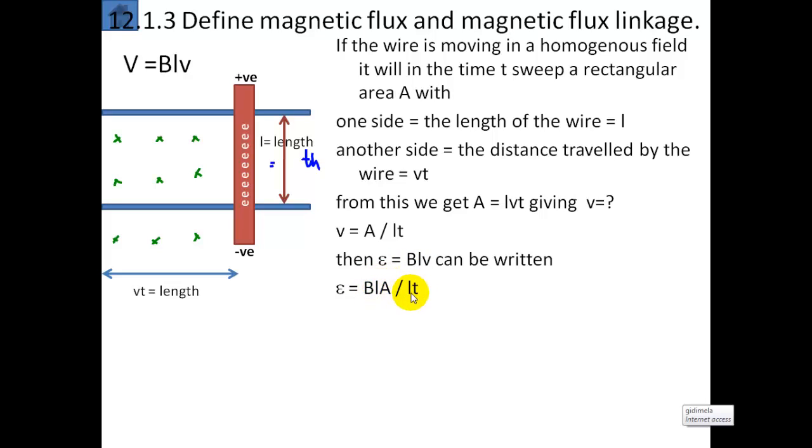This L and this L will cancel out. So we end up with EMF equals BA divided by t. It depends on the magnetic field strength and the area swept out by the conductor. The faster it moves, the more area it covers in a certain time and the greater the EMF.